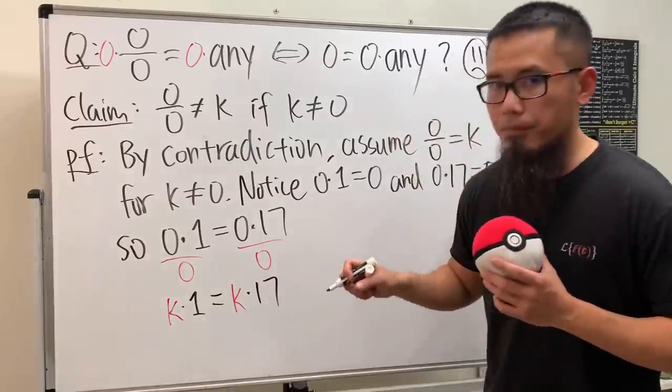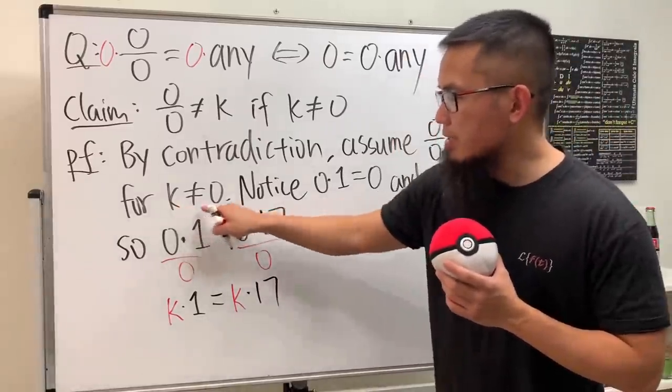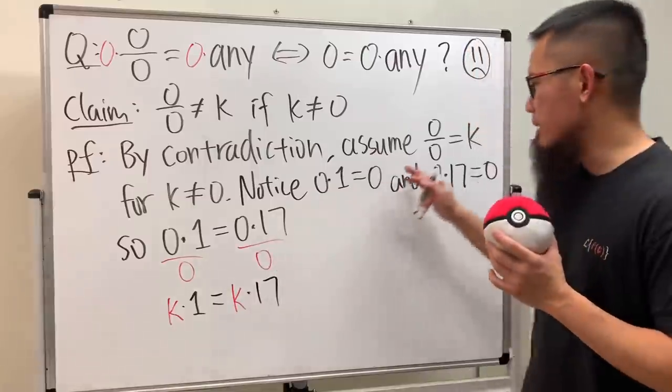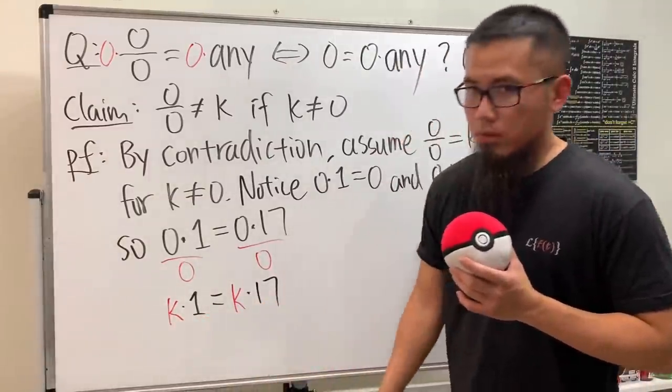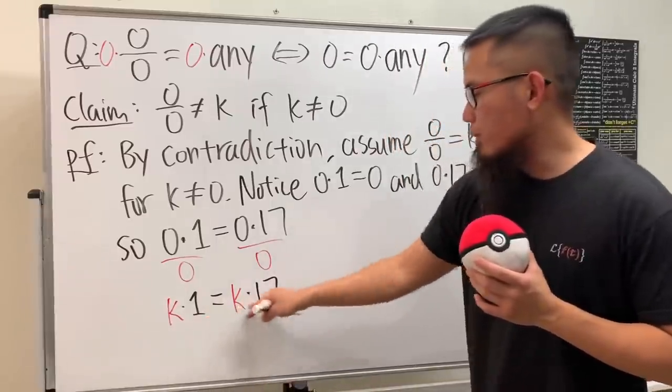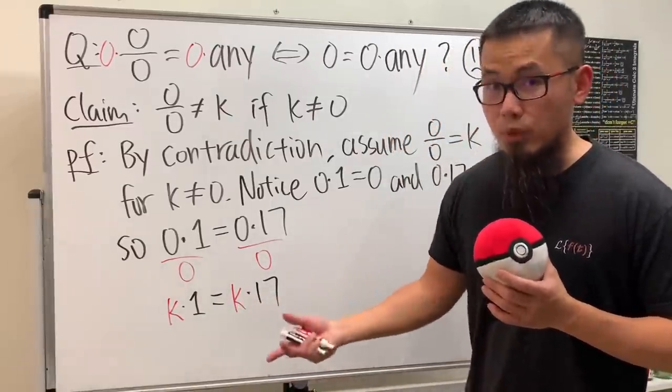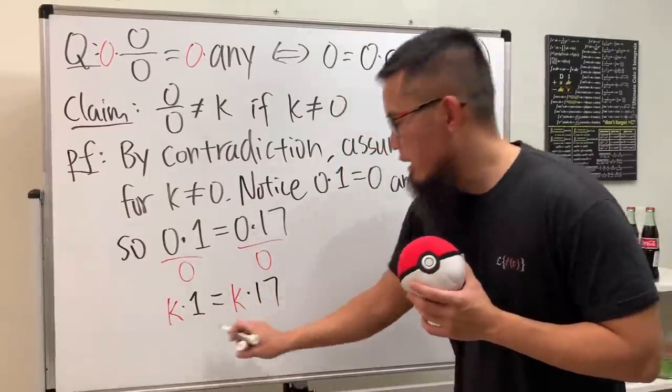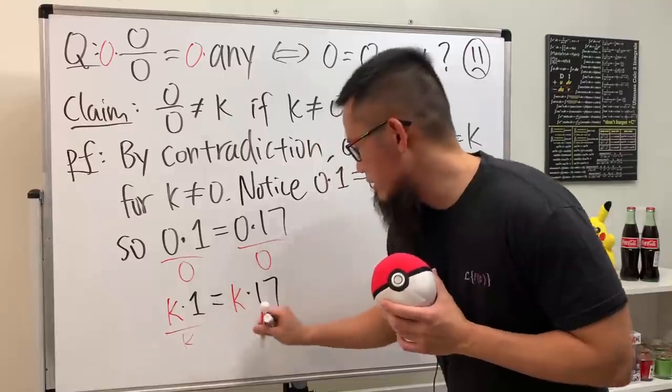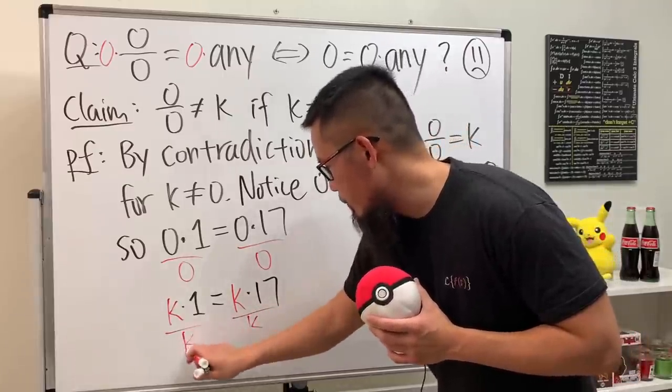Now because we said that k is not equal to zero, and again just imagine we are saying zero over zero is equal to 2. So if you have 2 times 1 is equal to 2 times 17, of course we can divide that on both sides. So here we can just divide the k on both sides. Therefore we can see that, let me actually divide the k on both sides, it's kind of satisfying when we do that.